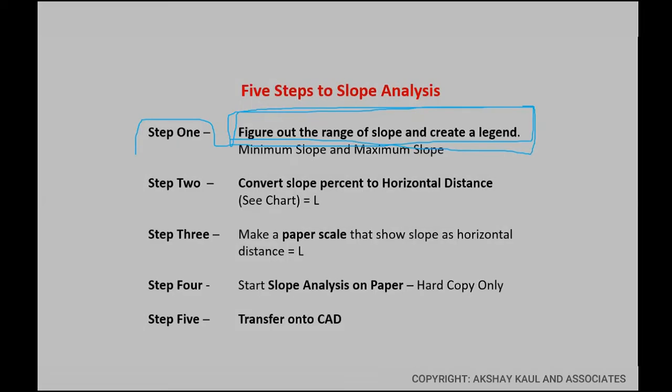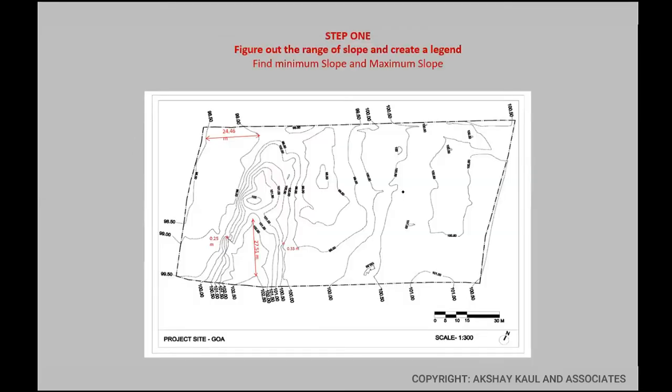So let's move on to step one. This is your Goa map. It's very evident that we always take this perpendicular distance when you have to measure, because the perpendicular distance is the shortest distance between two contours. You will not measure it like this—this is wrong, this is the right way.